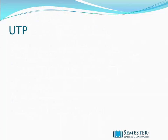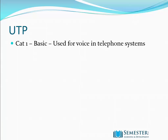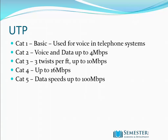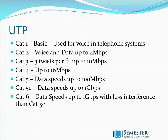There are a number of different categories. CAT1 is your basic telephone cable. CAT2 supports voice and data up to 4 Mbps. CAT3 has 3 twists per foot and supports up to 10 Mbps. CAT4 supports up to 16 Mbps. CAT5 supports 100 Mbps. CAT5e supports up to 1 Gbps. CAT6 offers even less interference than CAT5e.